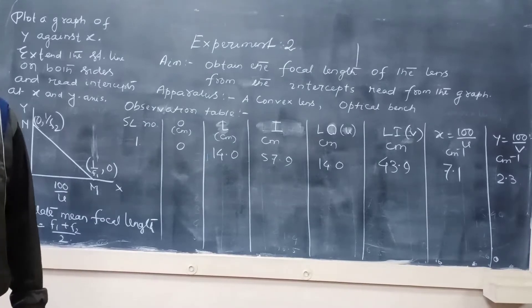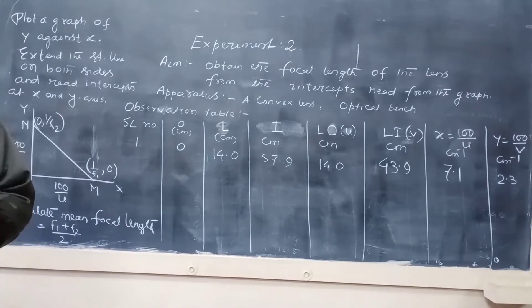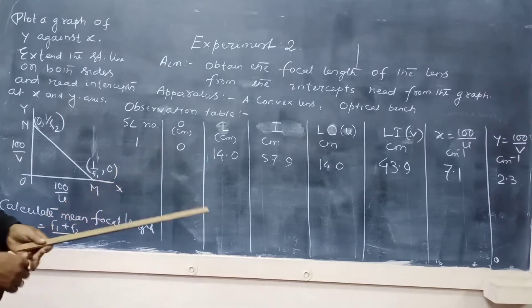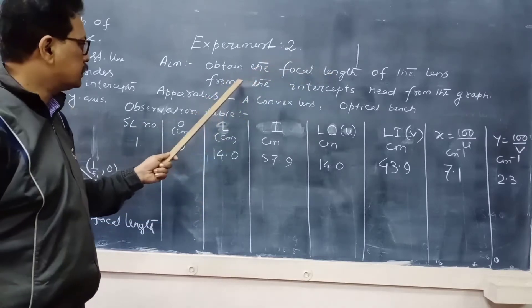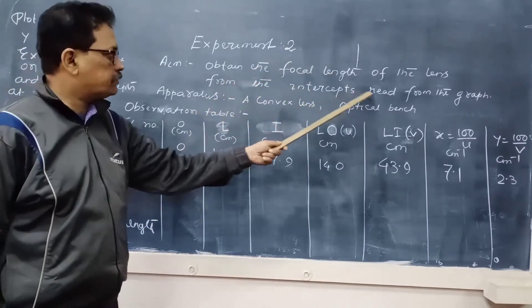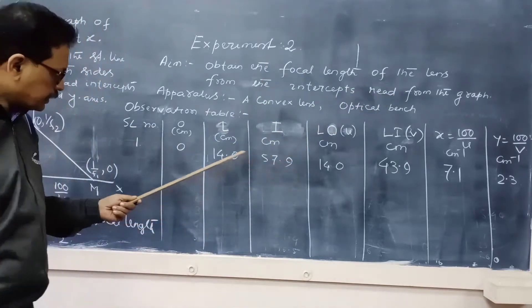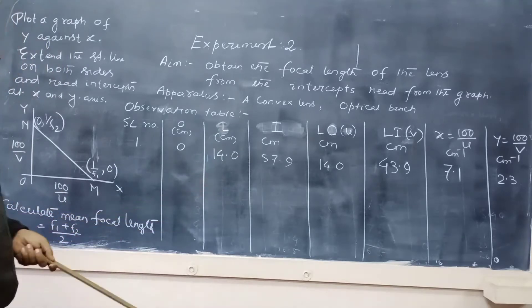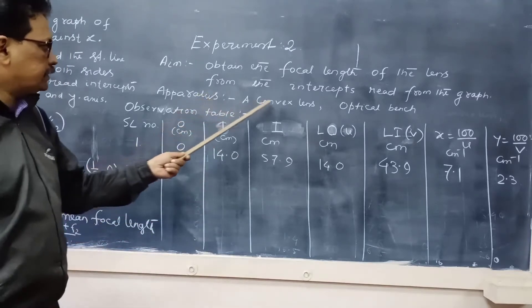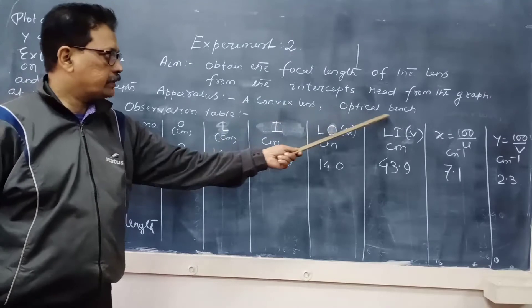Ok students, this is the second experiment which is also determination of focal length of a lens from the intercept read from the graph. We are calculating focal length in a different method. The apparatus needed are convex lens and optical bench.